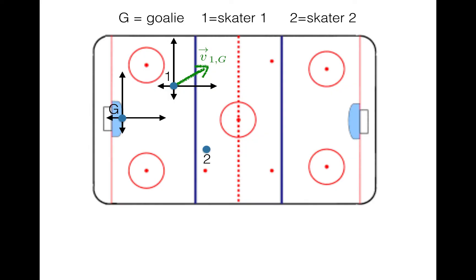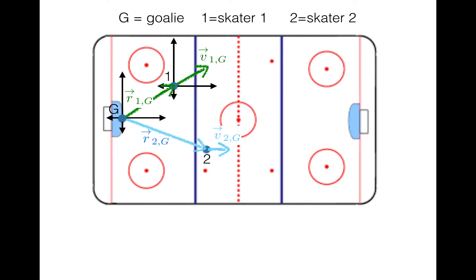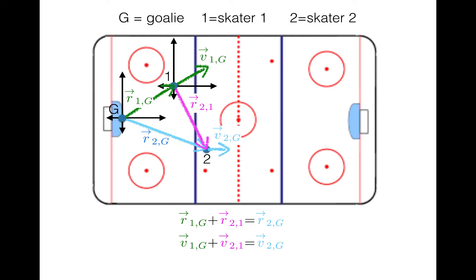A second skater is located here, and from the goalie's perspective, her velocity looks like this. The question I would like to answer is: what is the velocity of Skater2 from the frame of reference of Skater1? The first step is to relate some positions. According to the goalie, player1's frame of reference is here and player2's position is here. The position of player2 from the frame of reference of player1 gives us the relationship: r₁g + r₂₁ = r₂g. Now I'm going to differentiate this equation — since the derivative of position with respect to time is velocity — giving us v₁g + v₂₁ = v₂g.